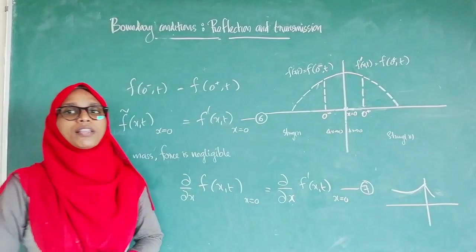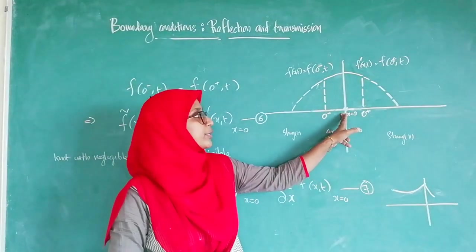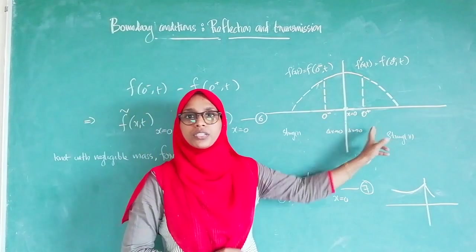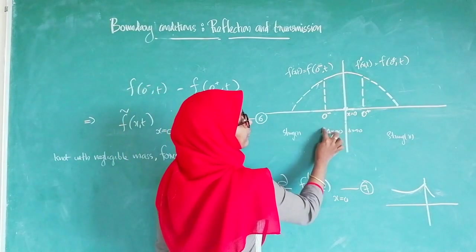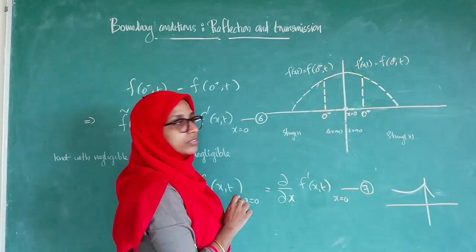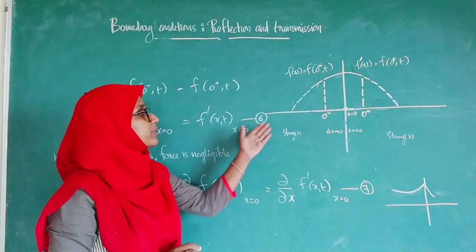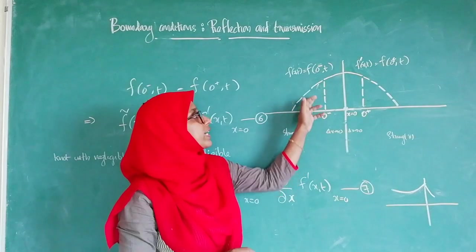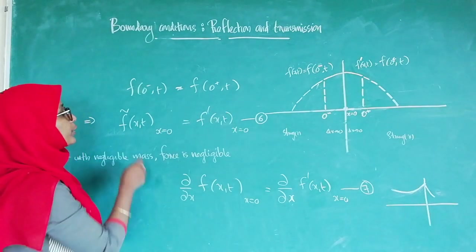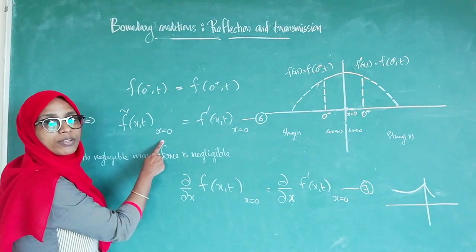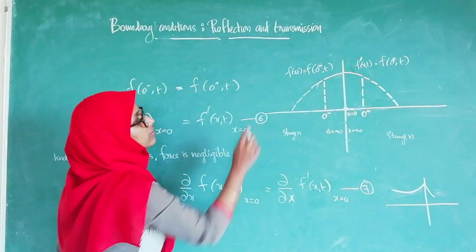We know the sinusoidal wave is a continuous function, so it will not have a break at the node and will be continuous when travelling from string 1 to string 2. To explain this, we consider two nearby points 0-minus and 0-plus, where the reference is at X equals 0. According to the continuity condition, F of (0-,t) equals F of (0+,t), which gives us: F of X,t at X=0 equals F' of X,t at X=0 — boundary condition equation 6.